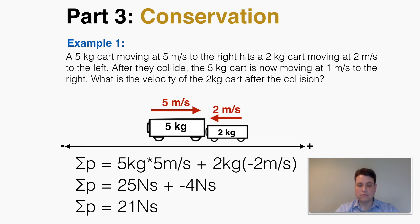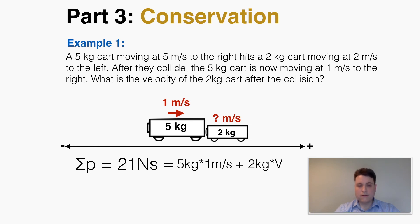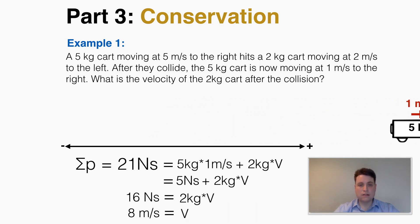After the collision, the total momentum must still equal 21 Newton-seconds. The new momentum of the 5 kg cart is 5 × 1 = 5 Newton-seconds, and the new momentum of the 2 kg cart is 2 times the unknown velocity. Solving algebraically, the new velocity is 8 meters per second. So it's 100% certain that if the 5 kg cart is moving at 1 m/s, the 2 kg cart must be moving at 8 m/s after the collision.